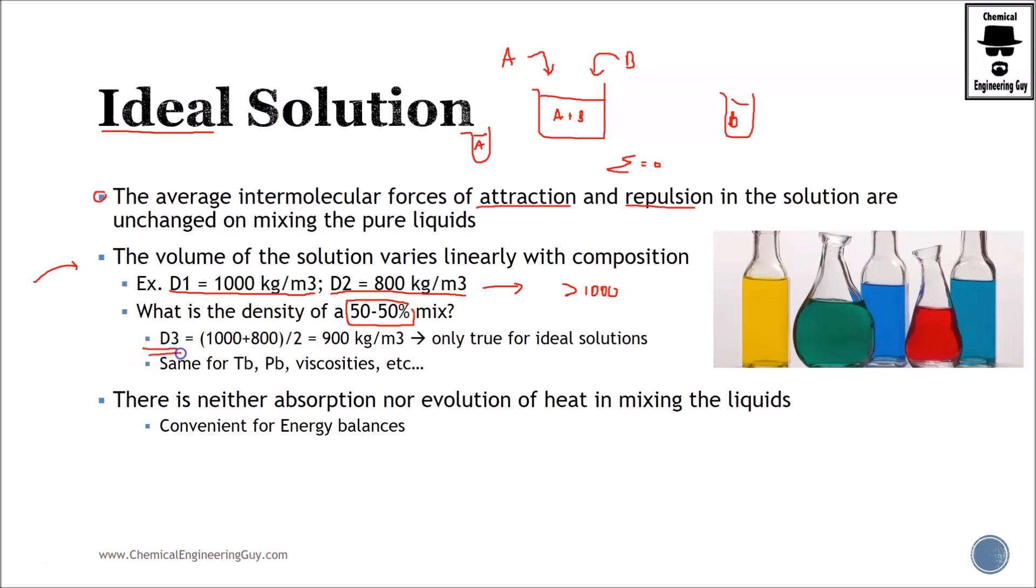An ideal solution will in fact have the linear or arithmetic value, so if you mix the same amount of substance one and substance two, you should get these 900 kilograms per cubic meter, which makes sense. And if this is the case for your solution, then you can assume this is an ideal solution.